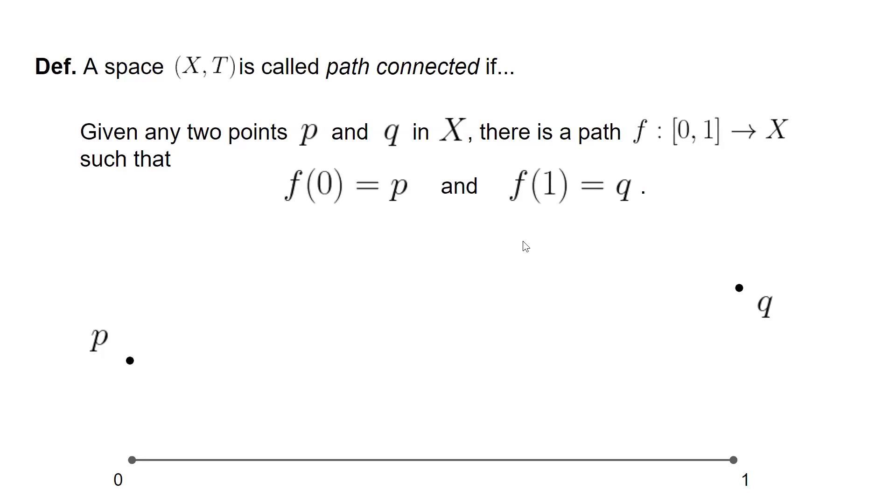That space is called path connected if given any two points, so if I give you a point p and another point q, you can find some path between p and q. It might look like this, it might look much nicer like a straight line, doesn't matter, as long as you can always find a path, then your space is called path connected.